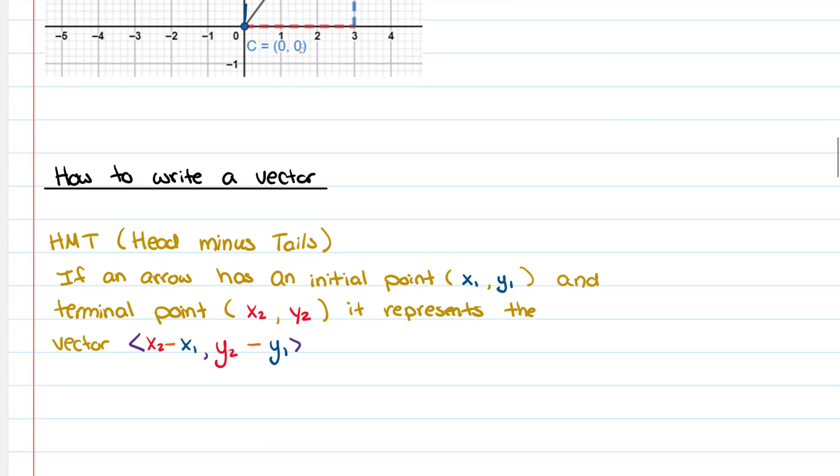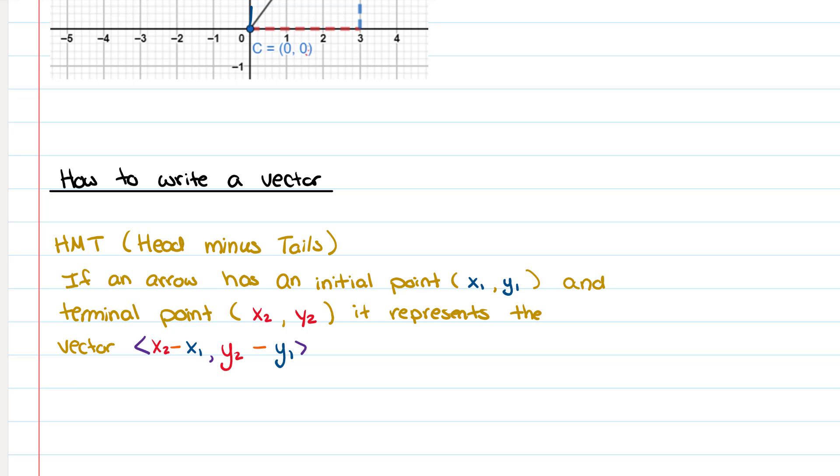If a vector does not start at the origin, this is how you are going to go ahead and write the vector. We call it the head minus tails method. If an arrow has an initial point x1, y1 and a terminal point x2, y2, it represents the vector x2 minus x1 comma y2 minus y1.